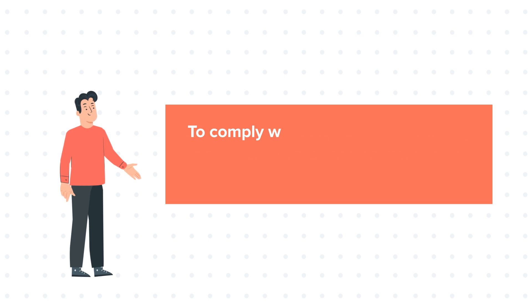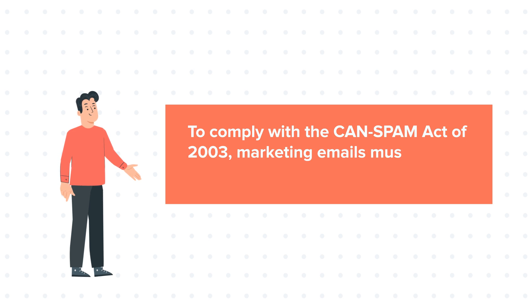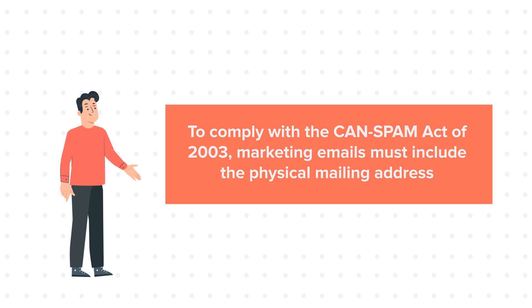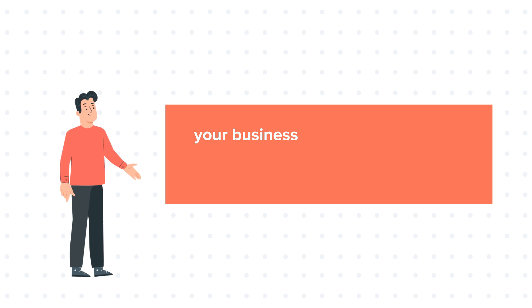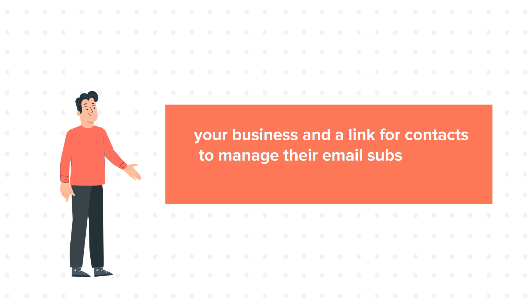To comply with the CAN-SPAM Act of 2003, marketing emails must include the physical mailing address of your business and a link for contacts to manage their email subscription preferences.